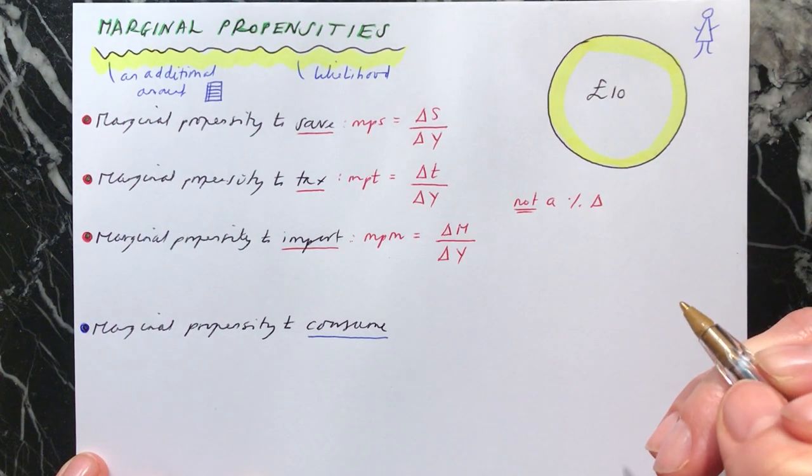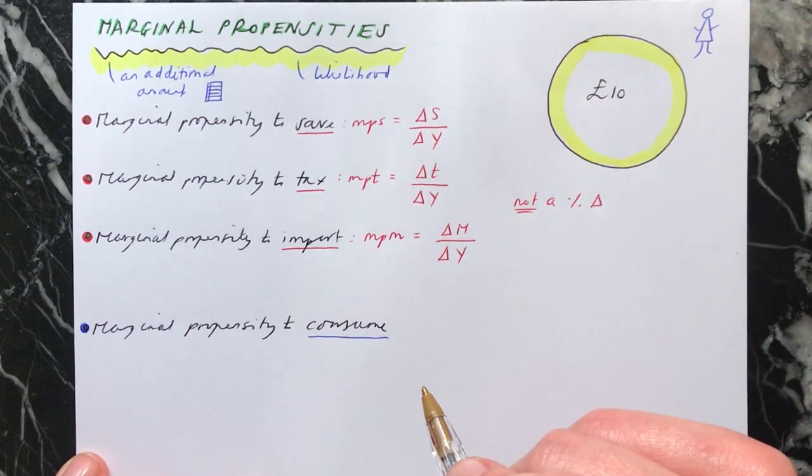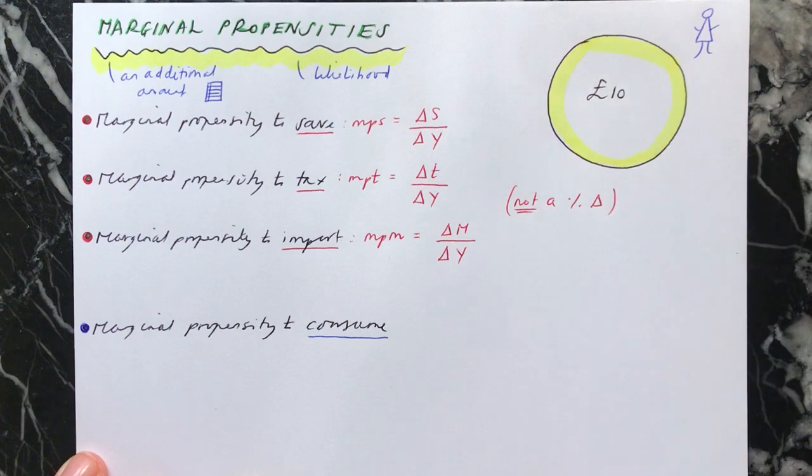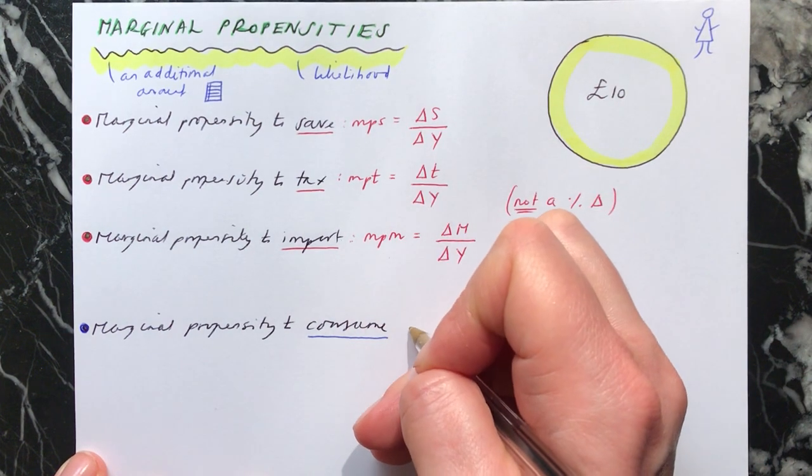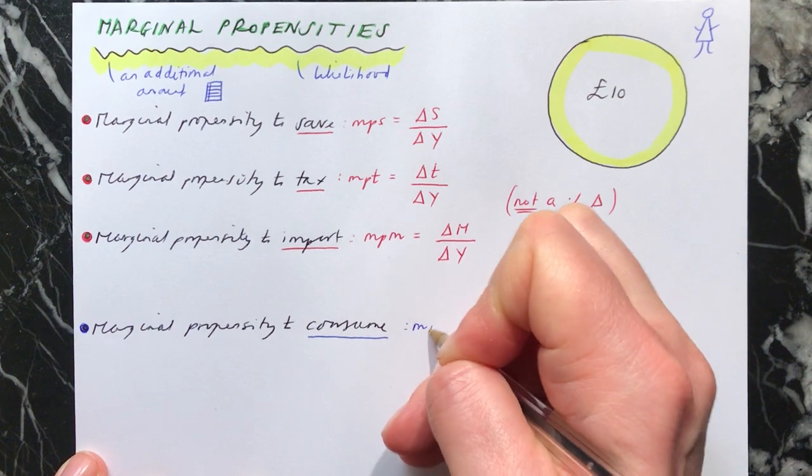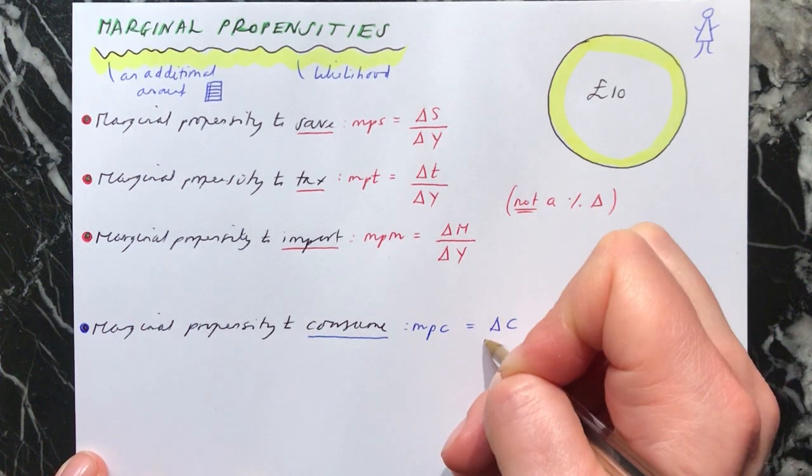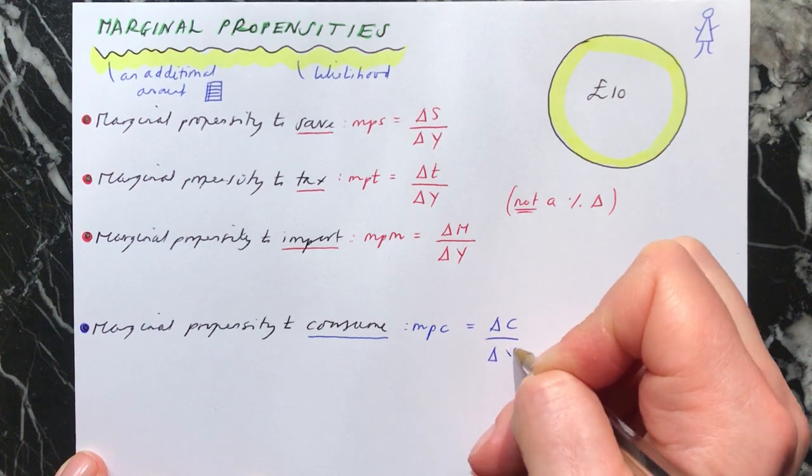And this is not a percentage change. That's really important. It's just a change. So going up 2, going down 7, anything like that. It's just a change. It's not a percentage change. Your marginal propensity to consume, this is MPC. And this is the change in your consumption divided by the change in your income.